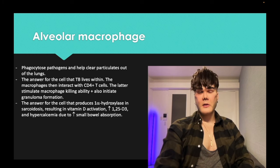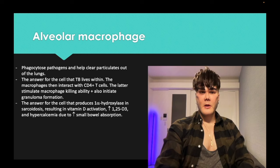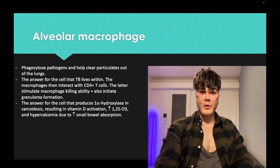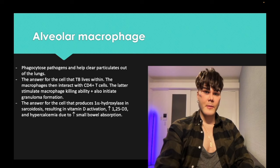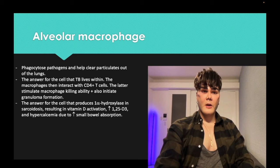Sarcoidosis is an autoimmune disease, usually in African-American women in their 20s to 30s, presenting with non-caseating granulomas in the lungs composed of epithelioid macrophages (histiocytes) that produce 1-alpha hydroxylase, activating vitamin D. The 1,25-D3 goes to the small bowel, increases calcium absorption, leading to hypercalcemia and suppression of PTH.